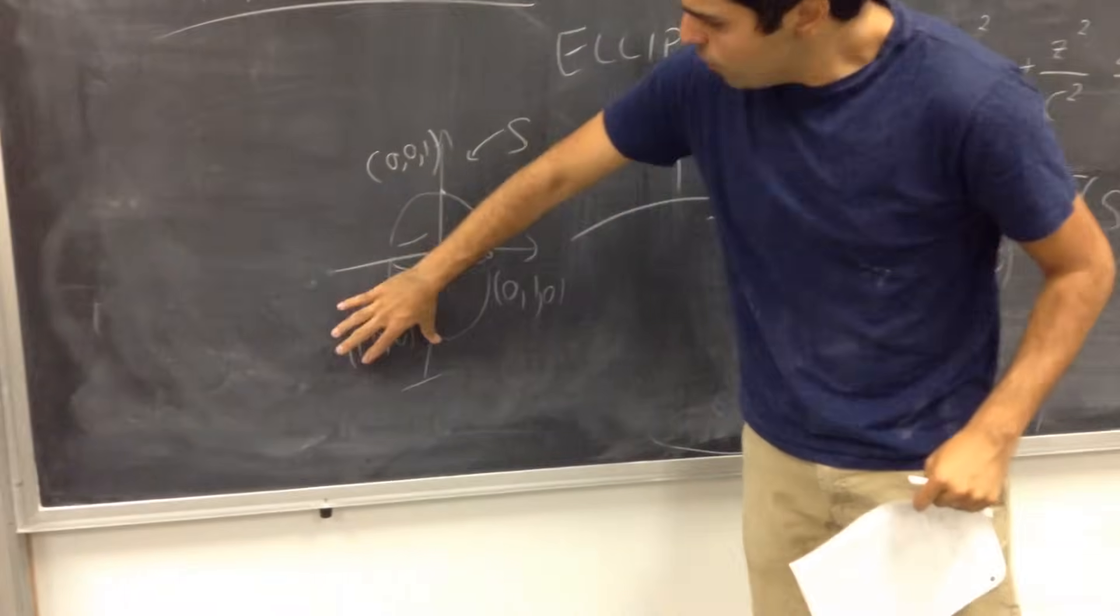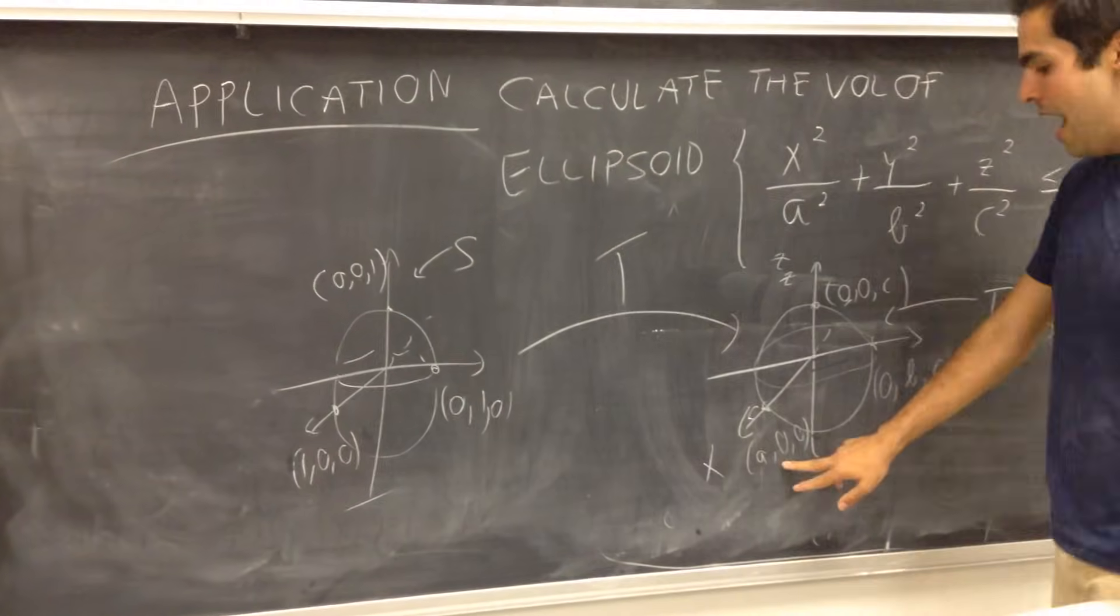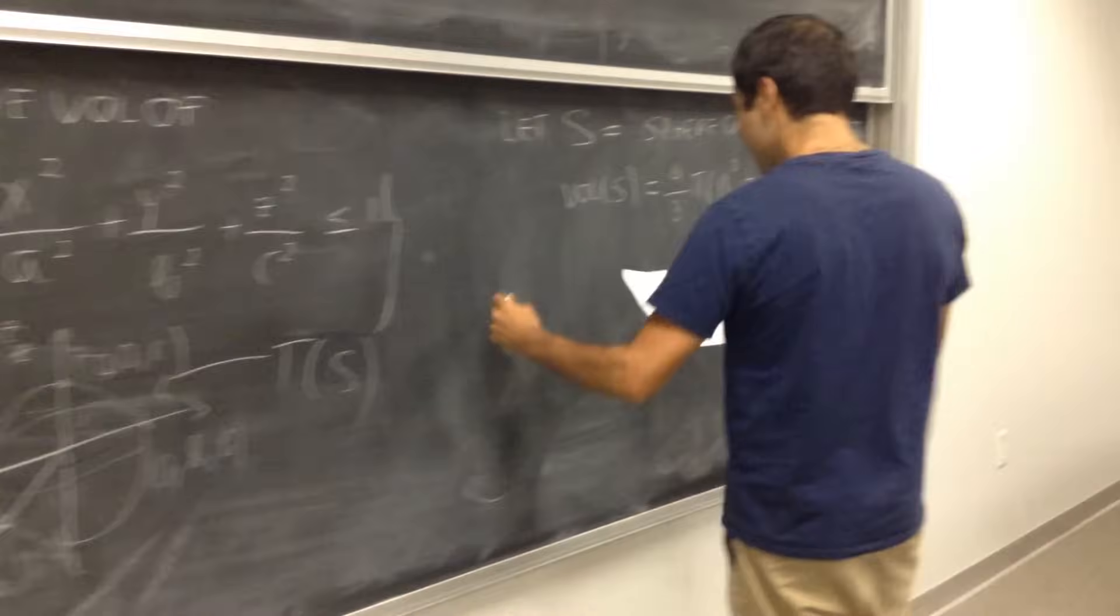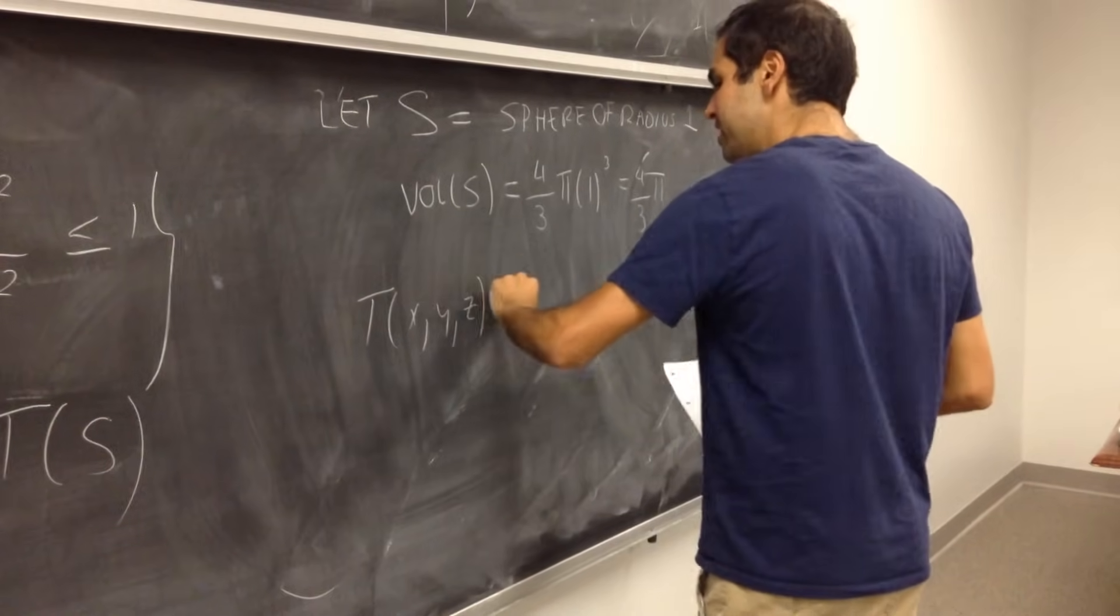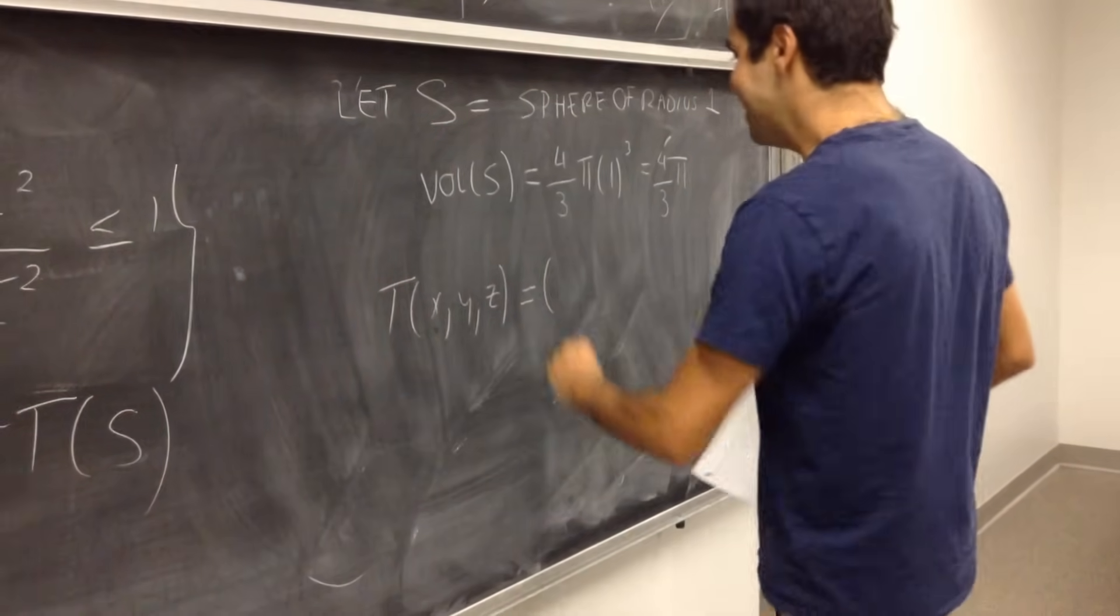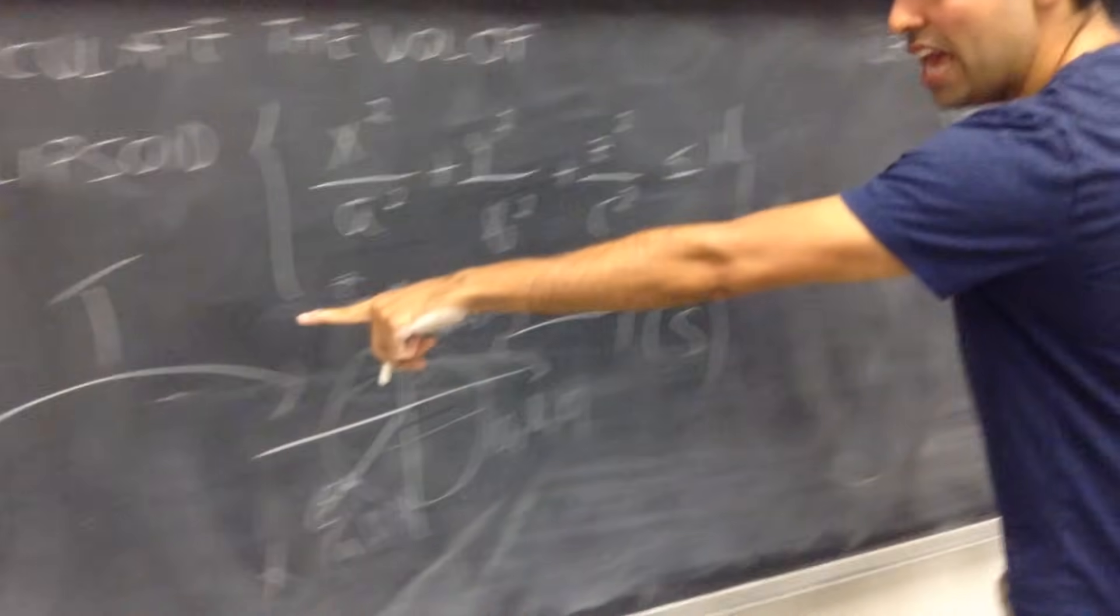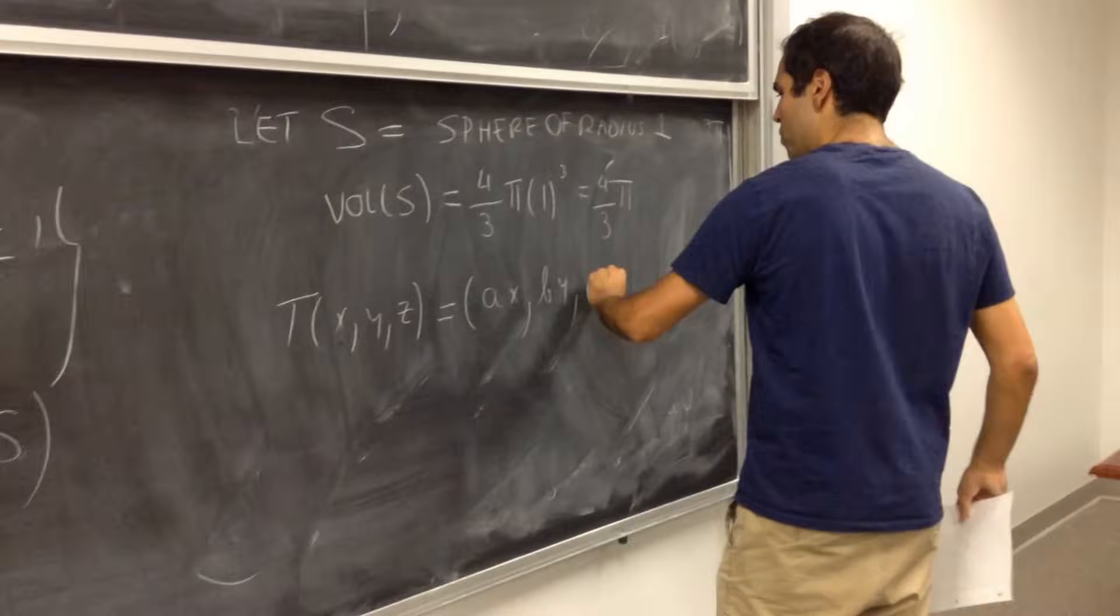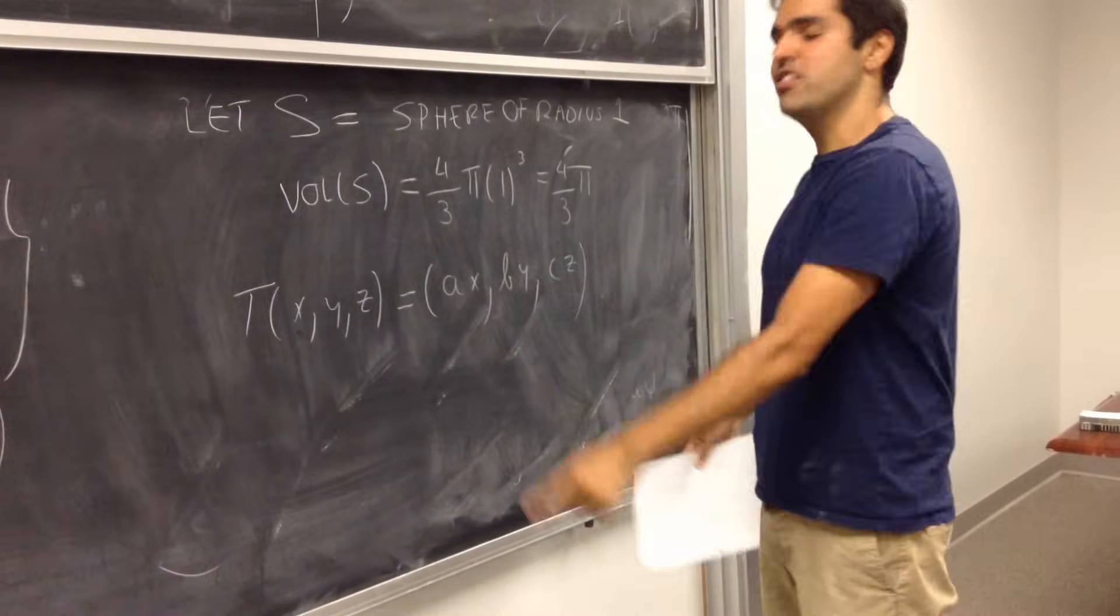Well, T, what properties does it have? It takes the point 1, 0, 0, and maps it to the point a, 0, 0. So, T should be T of x, y, z. All it does, it takes the point x and dilates it by a, so ax. Same with the point 0, 1, 0, you get by, and the point 0, 0, 1, you get cz. So, this is our linear transformation.